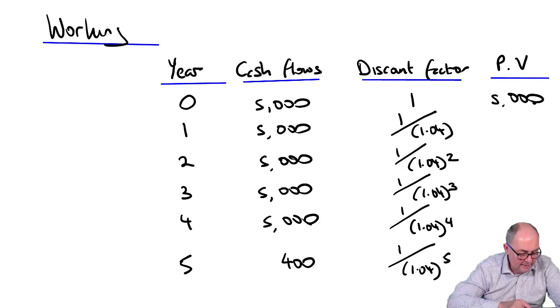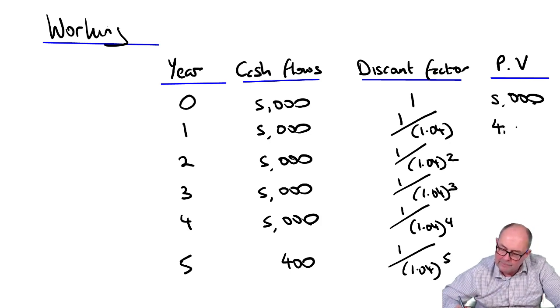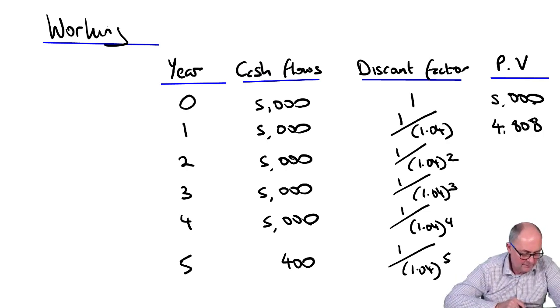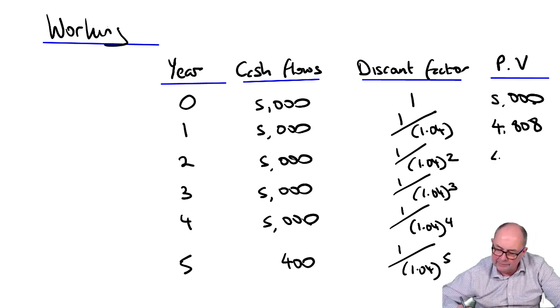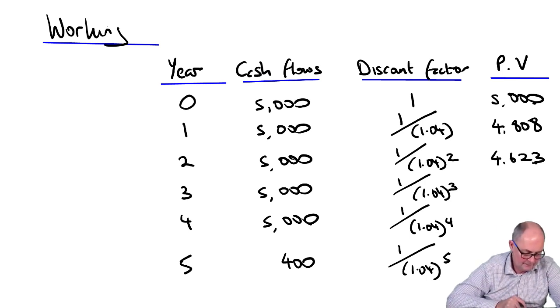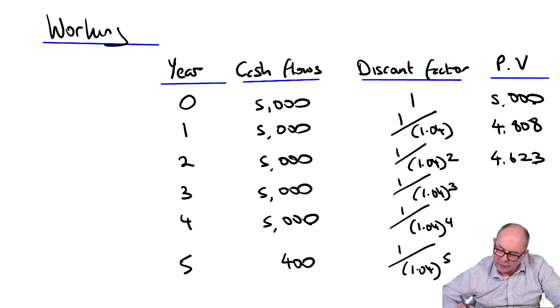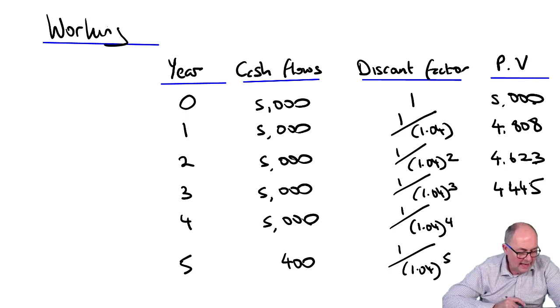End of year one, I've got 4,808. End of year two, I've got 4,623. Next year, I've got 4,445.